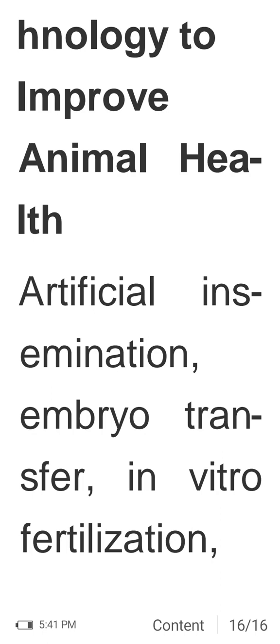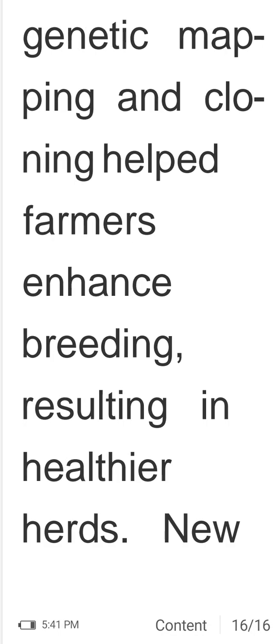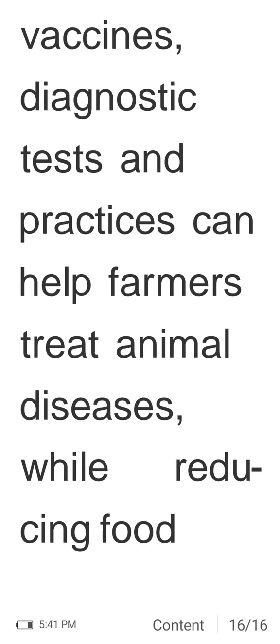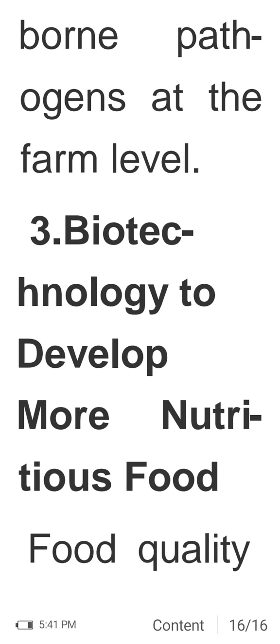Biotechnology to improve animal health includes artificial insemination, embryo transfer, in vitro fertilization, genetic mapping, and cloning — helping farmers enhance breeding and resulting in healthier herds. New vaccines, diagnostic tests, and practices can help farmers treat animal diseases while reducing food-borne pathogens at the farm level.